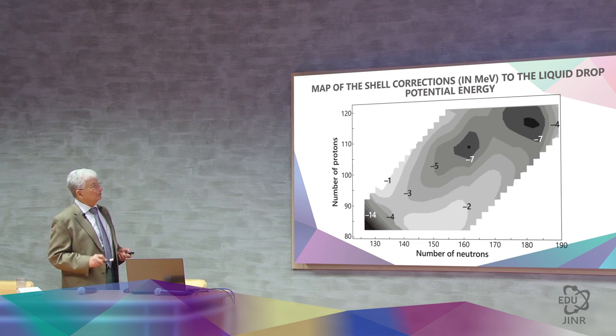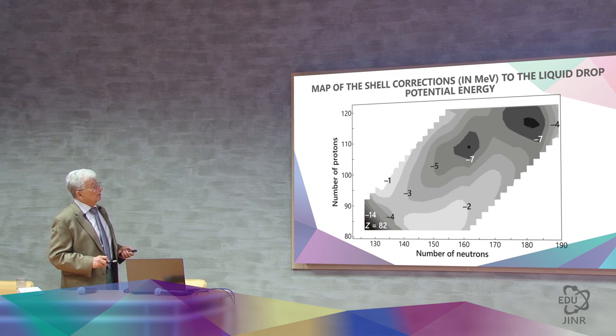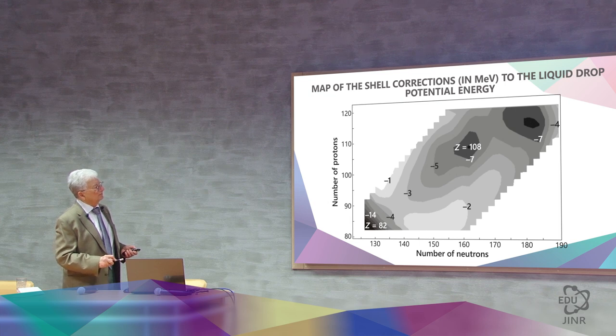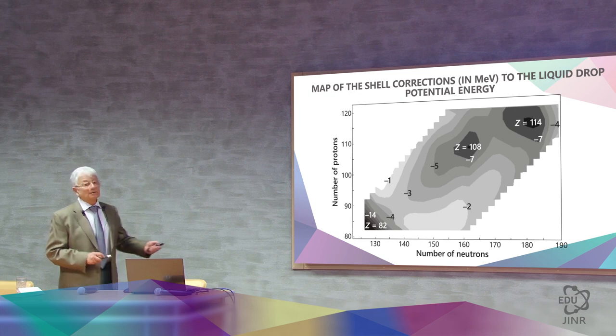And with this information, we can paint a landscape containing all of these shell corrections. And we see that if we have lead, for which this correction is 14 mega electron volt, and go further, then it falls, almost disappearing, then it suddenly appears again around where Z equals 108 and the number of neutrons is 162, before falling and reappearing again, with about 114 protons and 184 neutrons.